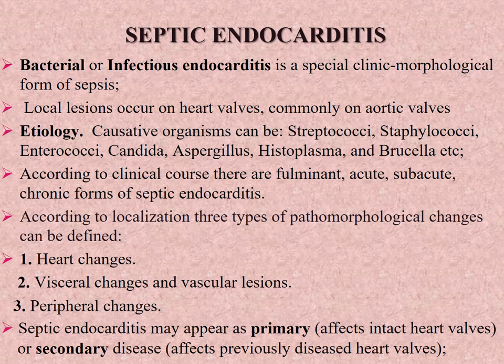Septic endocarditis — bacterial or infectious endocarditis — is a special clinical morphological form of sepsis, first described by William Osler in 1885. Local lesions occur on heart valves, commonly the aortic valve; the endocardium of cardiac chambers may also be involved. Etiology: causative organisms — streptococci are revealed in 50–80% of infective endocarditis. Streptococcus viridans, normally found in the upper aerodigestive tract, may disseminate during tonsillectomy, dental extraction, or dental cleaning, resulting in bacteremia.